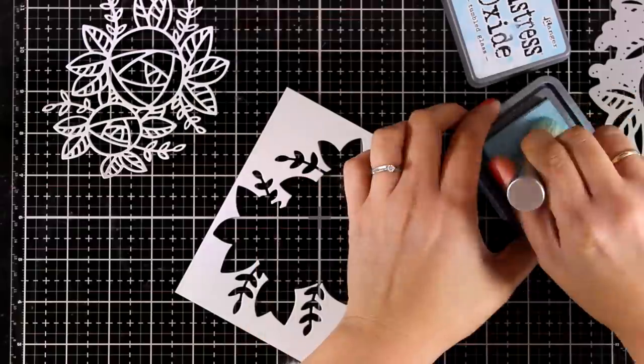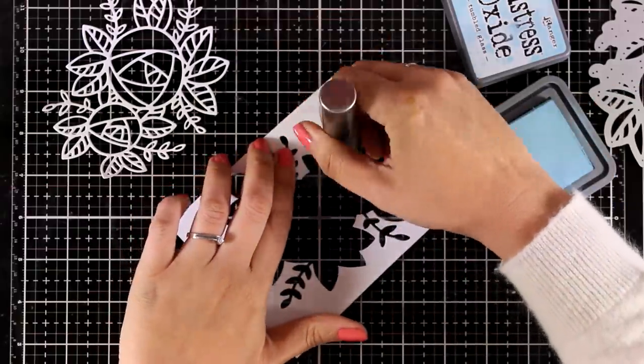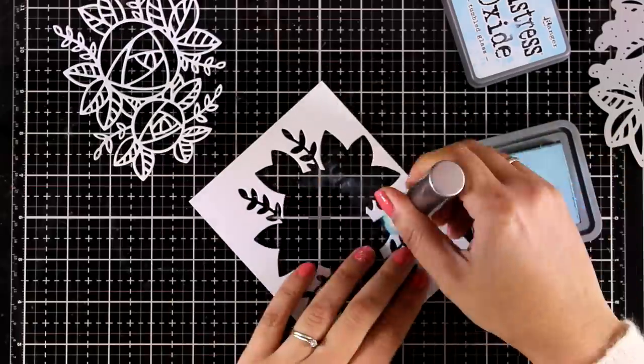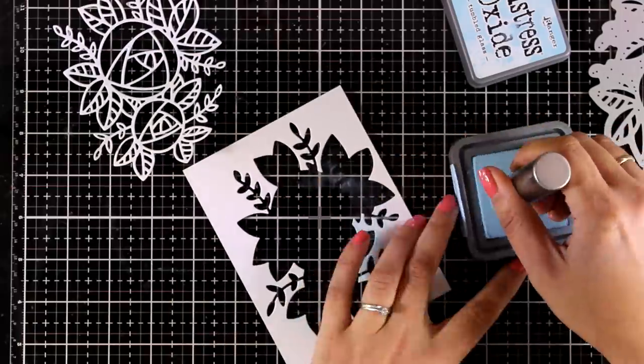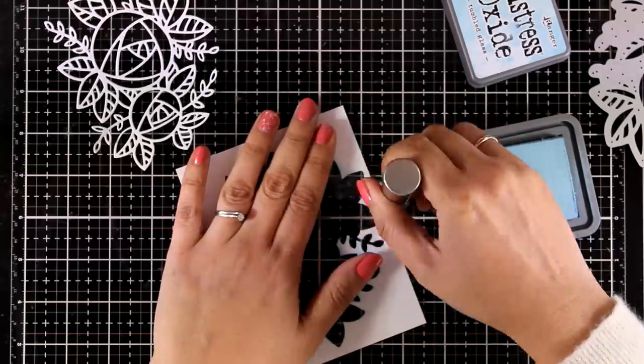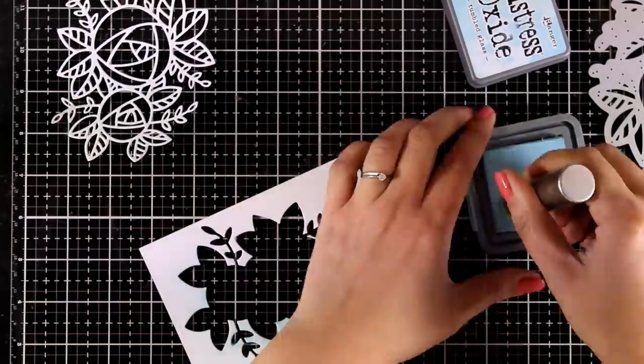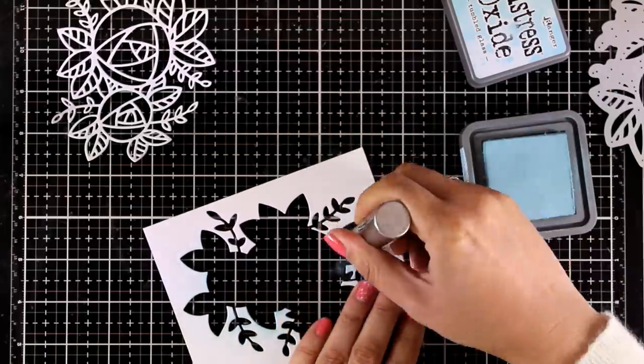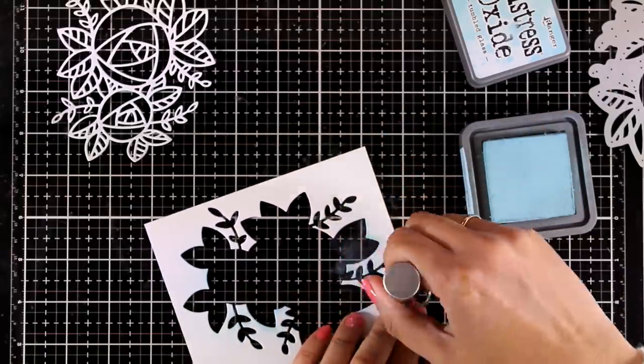For my background I am starting out by adding a little bit of inking all around this panel. This is going to help the flower when I put everything together to stand even more. I am using my blending brush to keep everything quite subtle since I don't want to have a lot of saturation of color there. I am using my Distress Oxide ink.